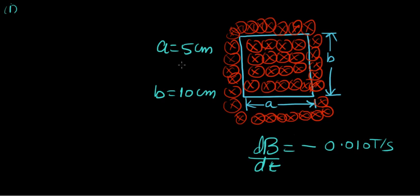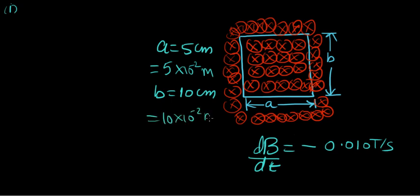There are a few parts to the problem and we'll go through each as we solve. Let's convert these into SI units so that we don't go wrong with the calculation. A is 5×10⁻² meters and B is 10×10⁻² meters. Let's keep that in mind when we calculate.